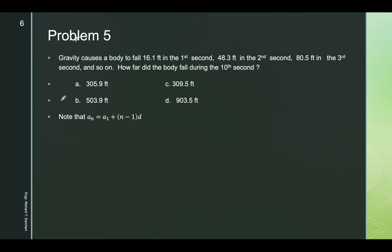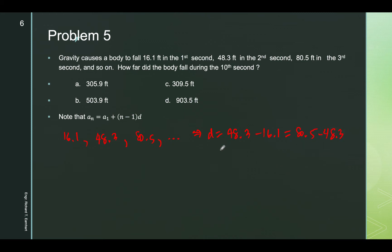We check the difference between two succeeding numbers: 16.1, 48.3, 80.5. D equals 48.3 minus 16.1, which equals 80.5 minus 48.3, and that is 32.2. Therefore the series forms an arithmetic progression.